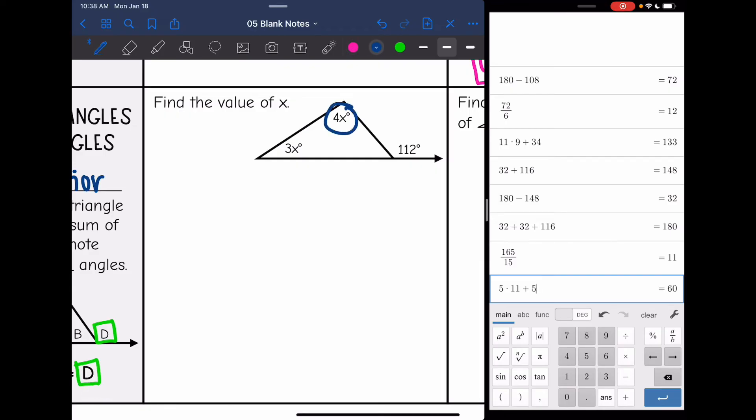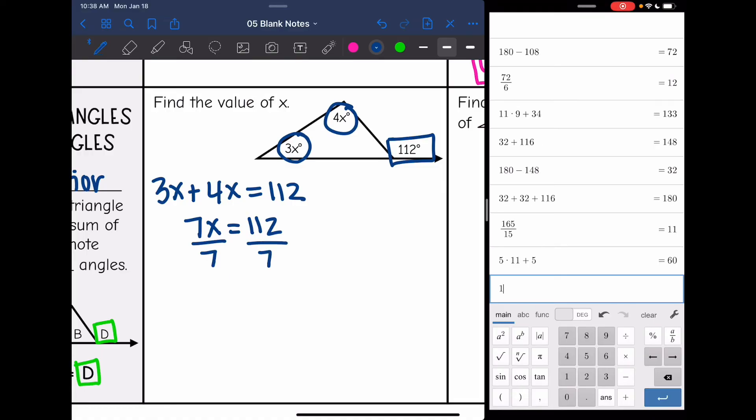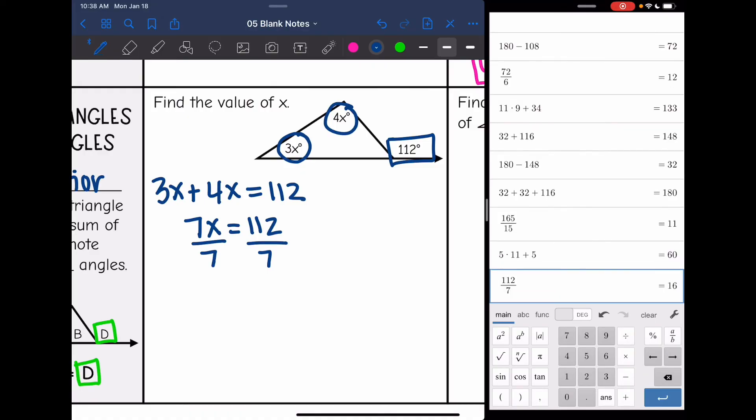So let's do that on this one to find the value of x. My two interior angles, 3x plus 4x, I'm going to add them together to set them equal to the exterior angle of 112. So 3x plus 4x will equal 112. Now I need to find x by combining like terms. 3x plus 4x is 7x equals 112. And then my last step is to divide by 7. And 112 divided by 7 is 16.